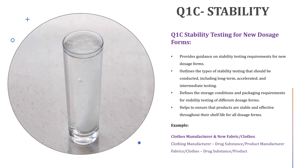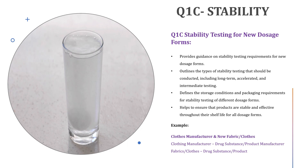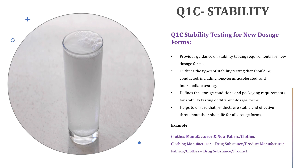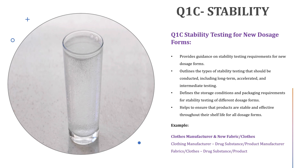Now let us look at Q1C — stability testing for new dosage forms. Imagine you are a clothing manufacturer who has developed a new type of fabric for shirts, where shirts and fabric represent a new dosage form. The ICH Q1C guidelines provide instructions on how to conduct stability testing for your fabric by subjecting it to different conditions like temperature and humidity to determine how long it will last. The guidelines also provide specific requirements for testing different types of fabrics like cotton or silk and offer guidance on interpreting the data, ensuring high quality products.